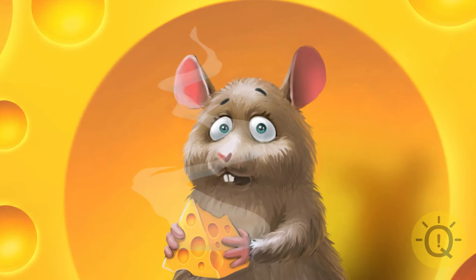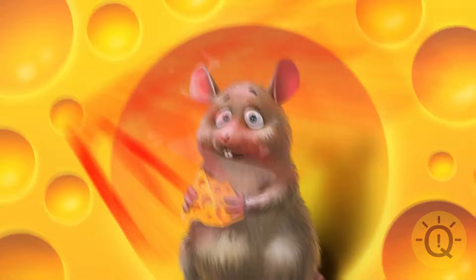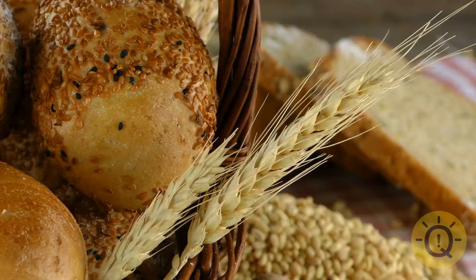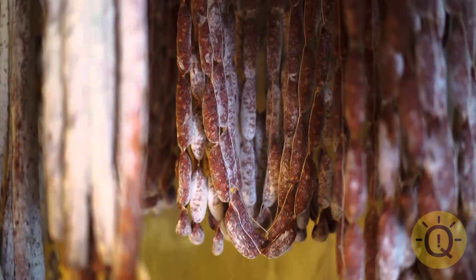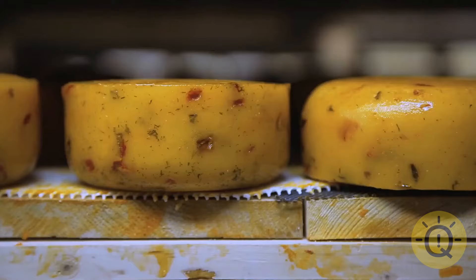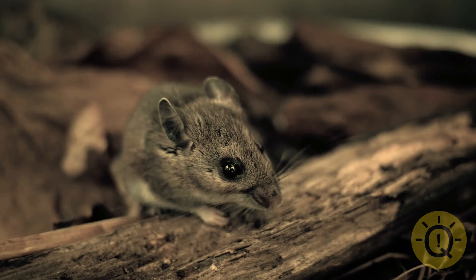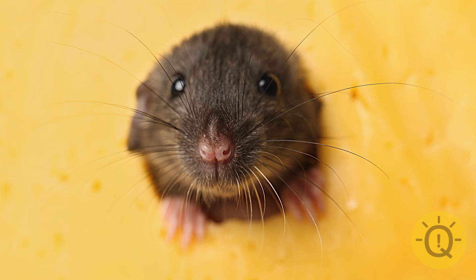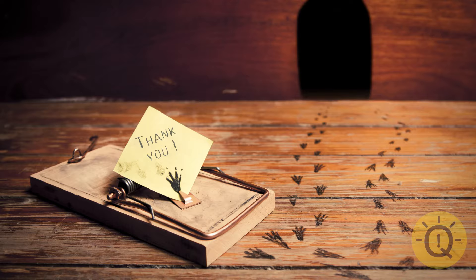Now, cartoons might show it differently, but mice are not actually that into cheese. This myth occurred during the Middle Ages. At that time, many foods rats and mice like way more than cheese were out of their reach. For example, people would store grains in jars or keep meat hanging. But cheese usually matured hidden in cupboards or shelves. Rats and mice could easily get to these spots. So, people would usually find them there, eating not what they liked the best, but what was within their reach.